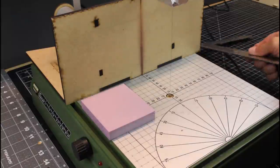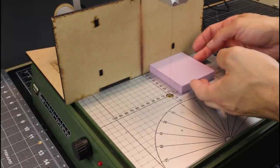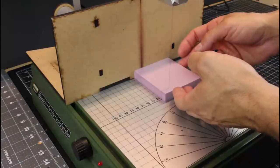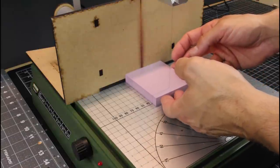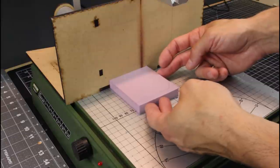Now we can run the foam back through the Proxxon along that high fence at whatever distance we want. In this case, it's a three by three square and it's going to be exactly square on all four corners.